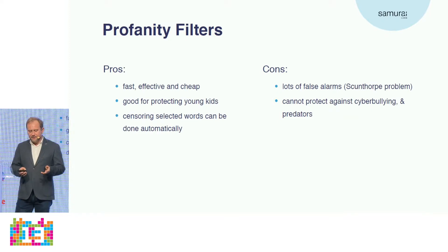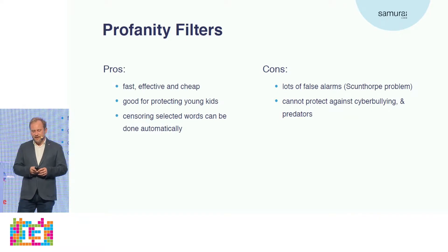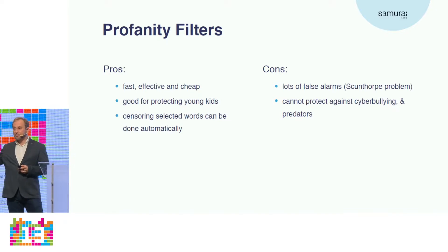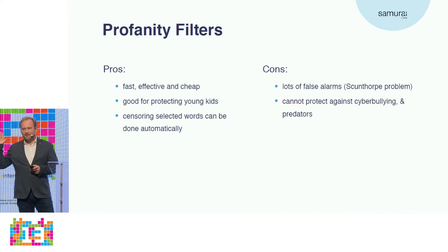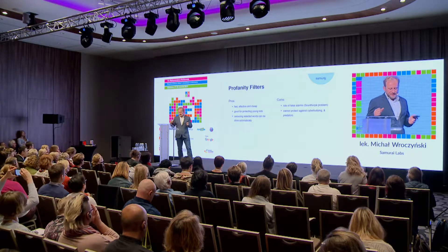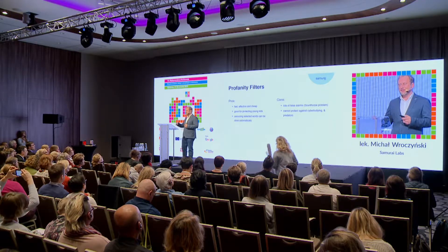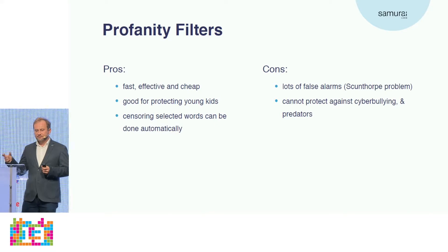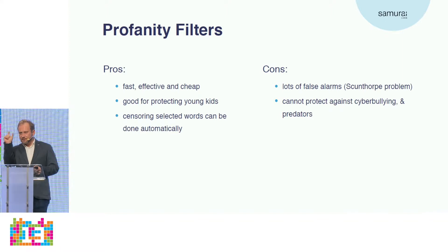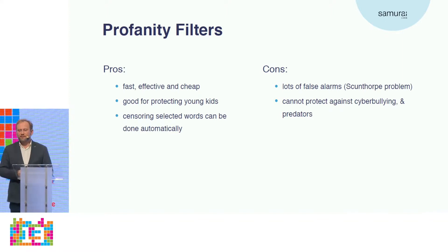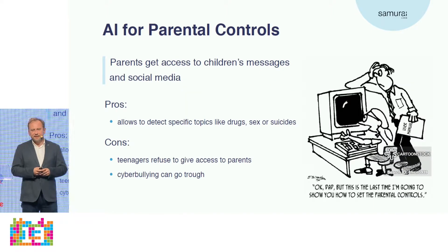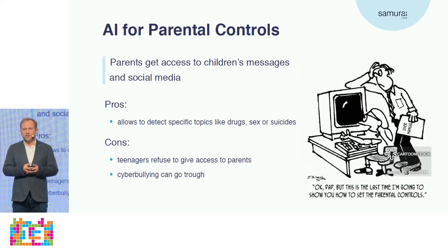Profanity filters also create what's called the Scunthorpe problem. There is a city called Scunthorpe, and no one could register an email from that city because the profanity filter in Google detected a banned word hidden inside the name. So there are really many errors with these systems, though they are effective for very small children.